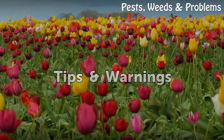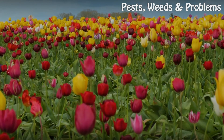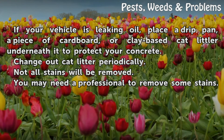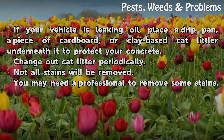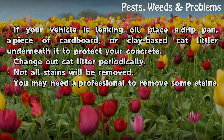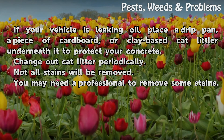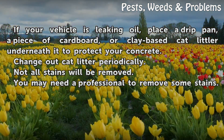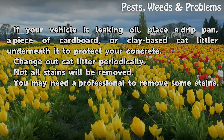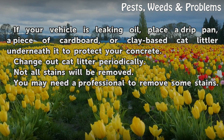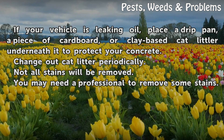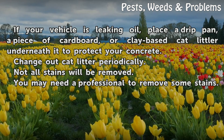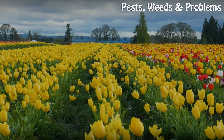Tips and Warnings. If your vehicle is leaking oil, place a drip pan, a piece of cardboard, or clay-based cat litter underneath it to protect your concrete. Change out cat litter periodically. Not all stains will be removed — you may need a professional to remove some stains.